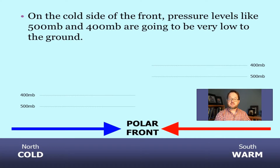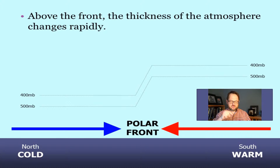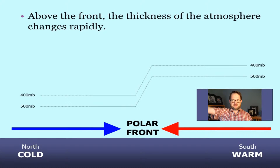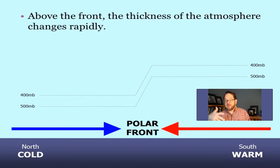On the cold side, isobaric levels like 500 and 400 millibars are pretty close to the ground. On the warm side, they're pretty far above the ground. Between them, right in the vicinity of the polar front but above it, the thicknesses of those layers are going to have to change pretty quickly, and therefore the heights of those isobaric levels are going to have to change very quickly. On the warm side, 500 millibars is way high; on the cold side it's not that high. Right near the polar front, the height of the 500 millibar surface changes very rapidly — same for 400, 300 millibars, or any level in the upper troposphere.